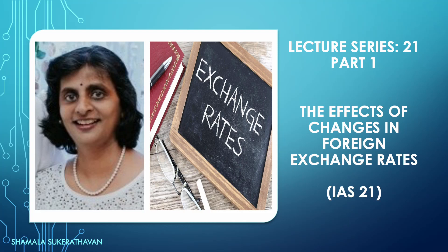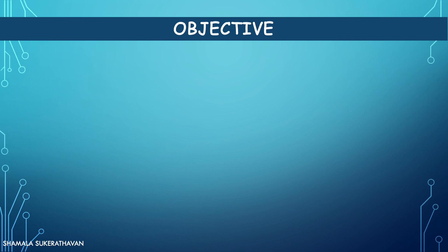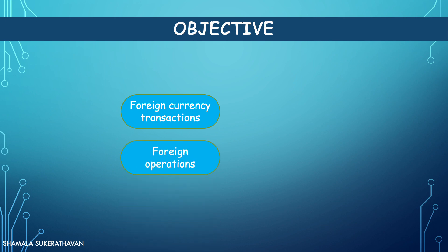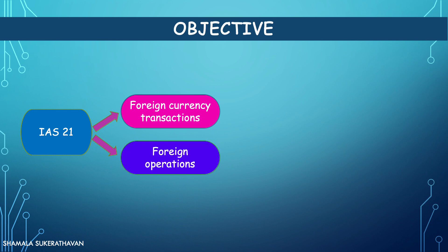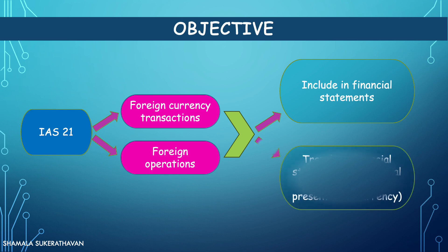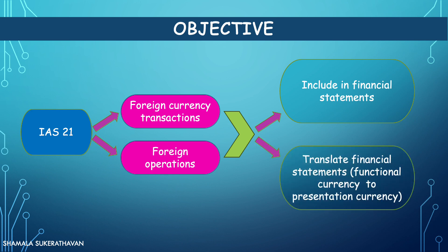Lecture Series 21 of Bite-sized Corporate Reporting focuses on IAS 21, the effects of changes in foreign exchange rates. This is a two-part lecture series. An entity may carry on foreign activities by either entering into transactions denominated in foreign currencies or may have foreign operations. The objective of IAS 21 is to prescribe how to include foreign currency transactions and foreign operations in the financial statements of an entity and how to translate financial statements into a presentation currency.